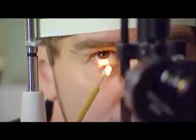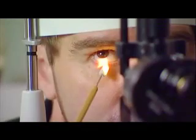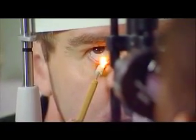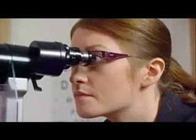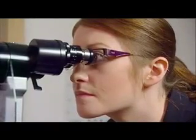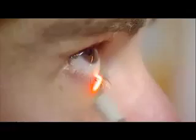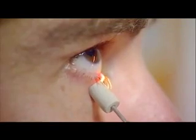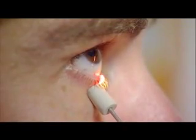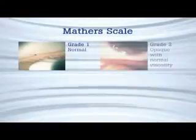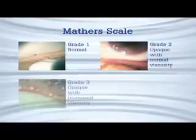The patient is advised to look up slightly. Holding the CORB device like a writing tool, a force of 15 grams per 30 square millimeters is applied to the external lid, mimicking the force applied to the lid during a blink. The Meibomian Expression is then graded using Mathers Scale.